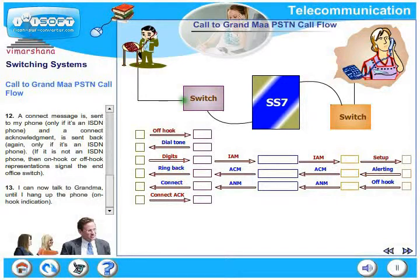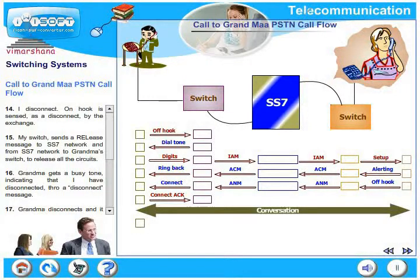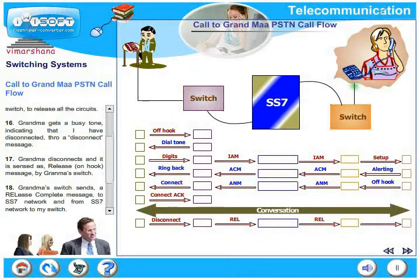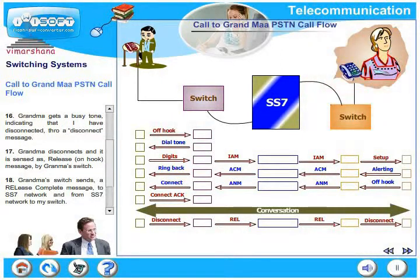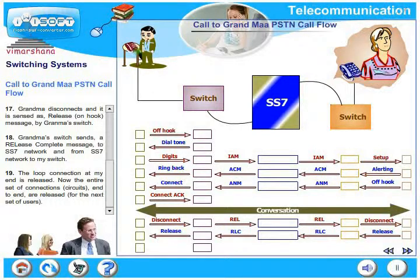If it is not an ISDN phone, then on-hook or off-hook representations signal the end of the switch. Thirteenth action: I can now talk to grandma until I hang up the phone, that is the on-hook indication. After the conversation is over, as the fourteenth action, let us say I disconnect. On-hook is sensed as a disconnect by my exchange. My switch sends a release message to the SS7 network, and from the SS7 network to grandma's switch to release all the circuits. Grandma gets a busy tone indicating that I have disconnected, through a disconnect message. Then grandma disconnects, and this is sensed as a release on-hook message by grandma's switch. Eighteenth action: grandma's switch sends a release complete message to the SS7 network, and from the SS7 network back to my switch. The loop connection at my end is released, and the entire set of circuits, end-to-end, are released for the next set of users.